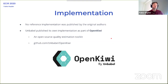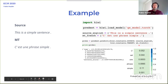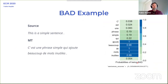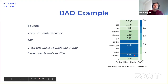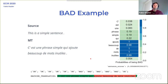There was no reference implementation for the predictor-estimator, but we published our own implementation as part of OpenKiwi, a quality estimation toolkit we released one year ago. For example, given a simple English sentence with a French translation that makes sense, the full predictor-estimator would output very low probabilities for each word being BAD — so they are all OK. But if the same source sentence is translated in some gibberish, the predictor-estimator outputs really high probabilities for those words being out of context, and you get BAD tags. These are real examples.